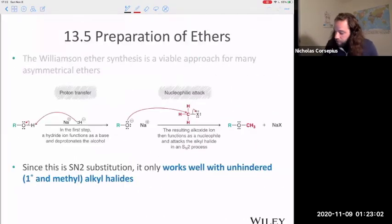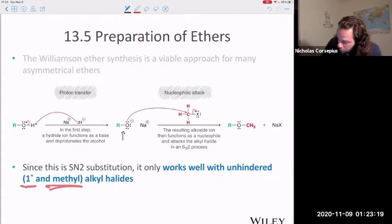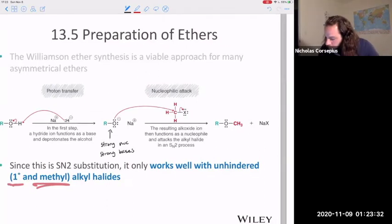Because this is going to be this SN2 style elimination, it's going to work well primarily with primary or methyl alkyl halides. If you have a secondary alkyl halide, it's not that it won't work, but you will have some competition with the elimination reaction. Remember, these alkoxide ions are strong nucleophiles, but they're also strong bases. So not like it's impossible, but you will have competing elimination reactions.